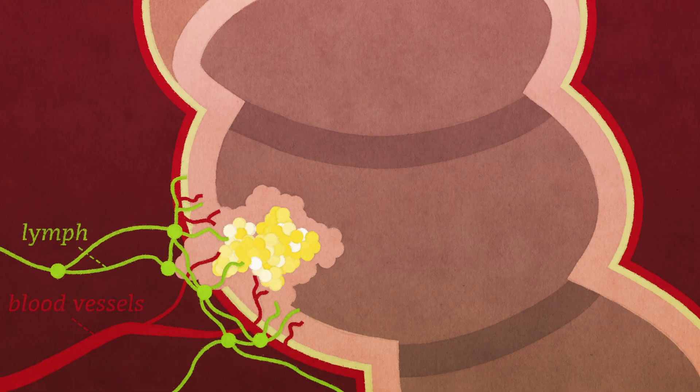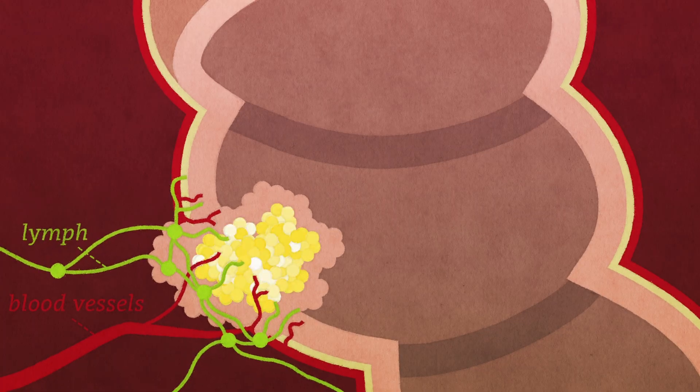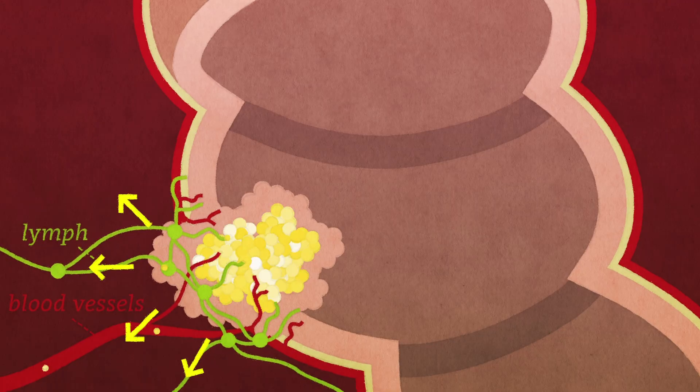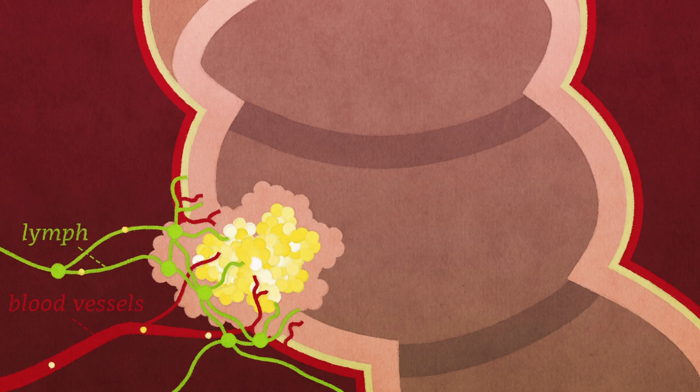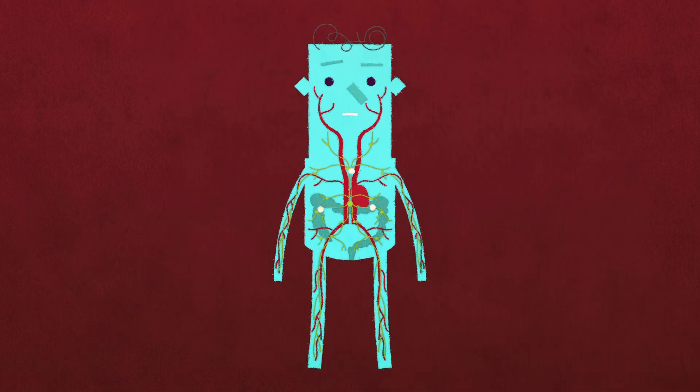In the worst cases, when cells within polyps divide and spread unchecked, they eventually break through the lining of the colon. Lymph and blood vessels carry those cells all over the body, and they can go on to form tumors.